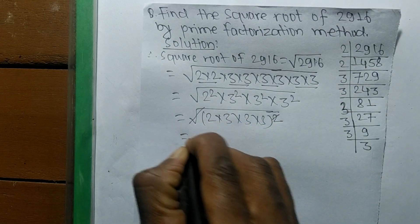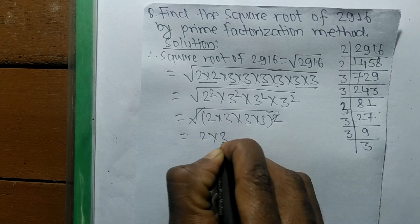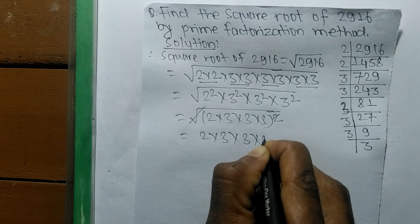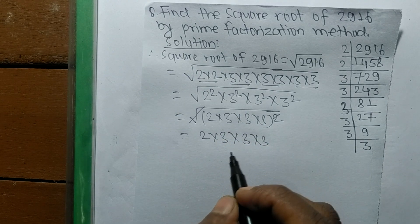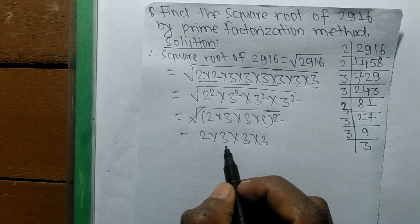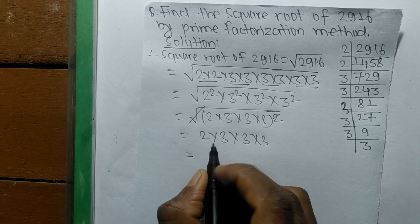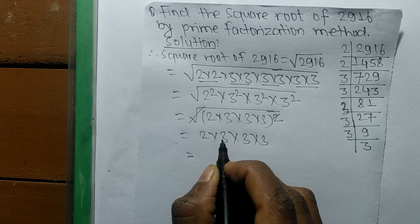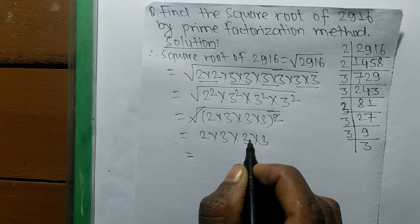So the remaining numbers are 2 into 3, 3 times 3. So now we have to find out the product of all these numbers. So 2 times 3 means 6, 6 times 3 means 18, and 18 times 3 means it is 54.